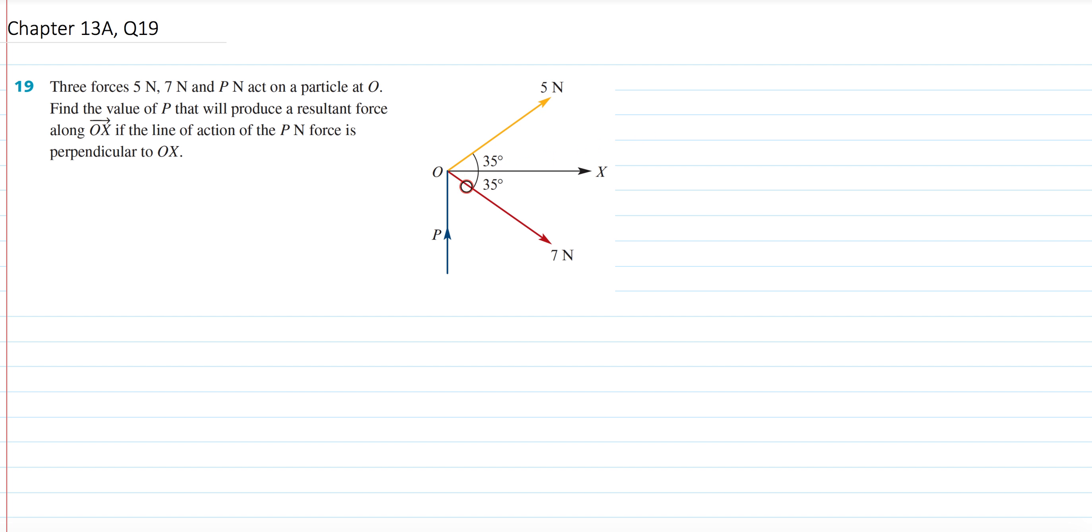And the question is saying, how much P would have to be so that your particle, whatever the particle is, only moves horizontally along OX, and does not move up or does not move down, meaning it does not have a vertical force. So the vertical force bounces out and turns out to be zero.